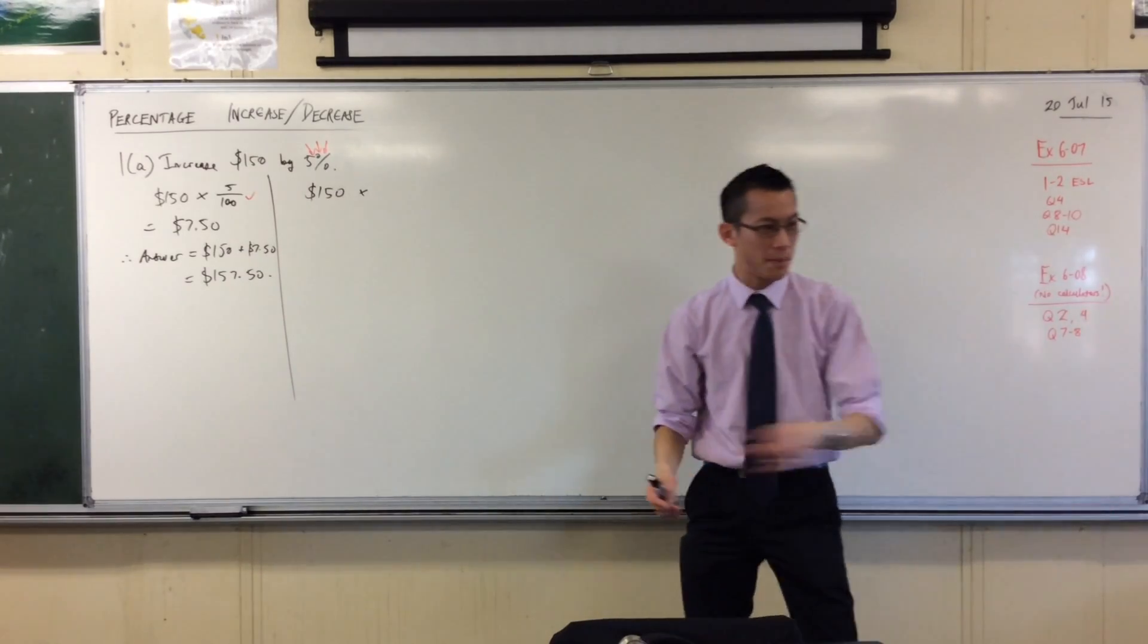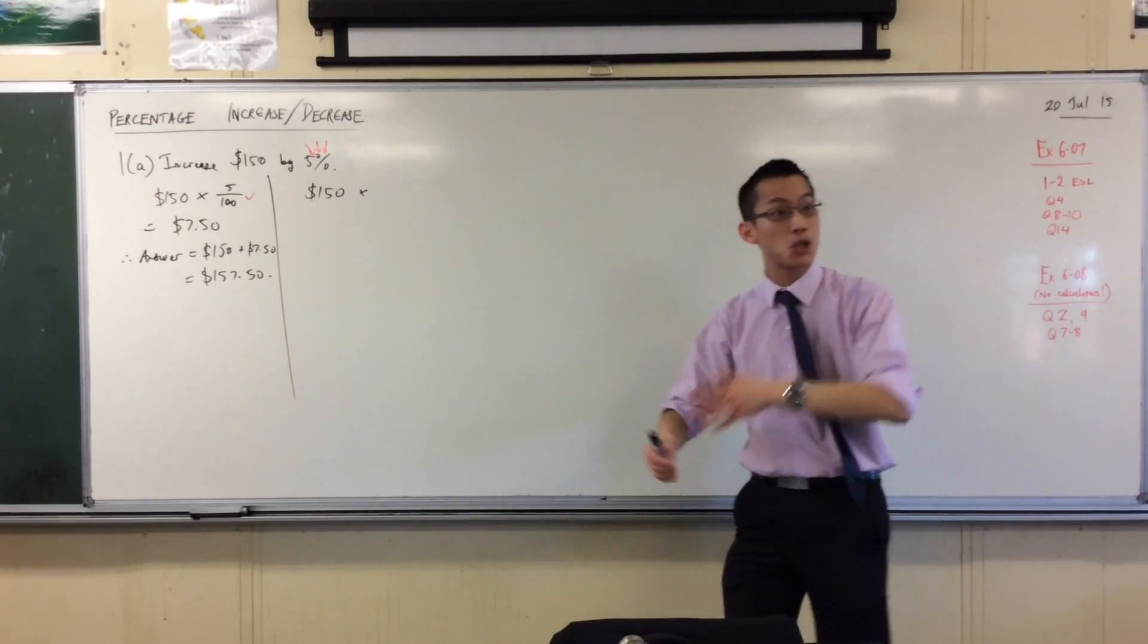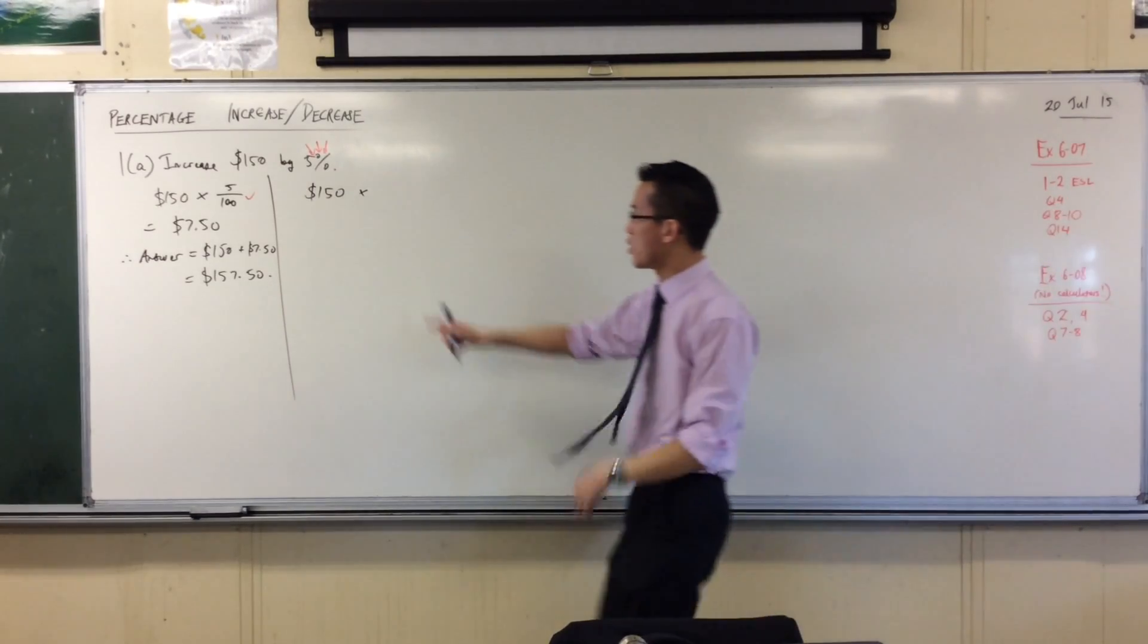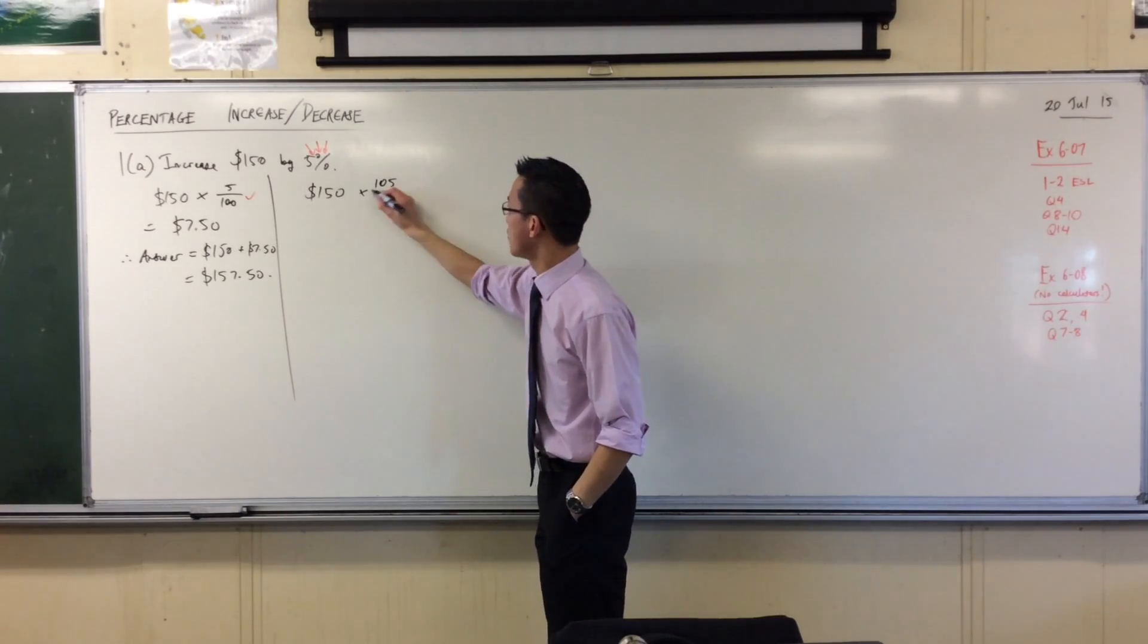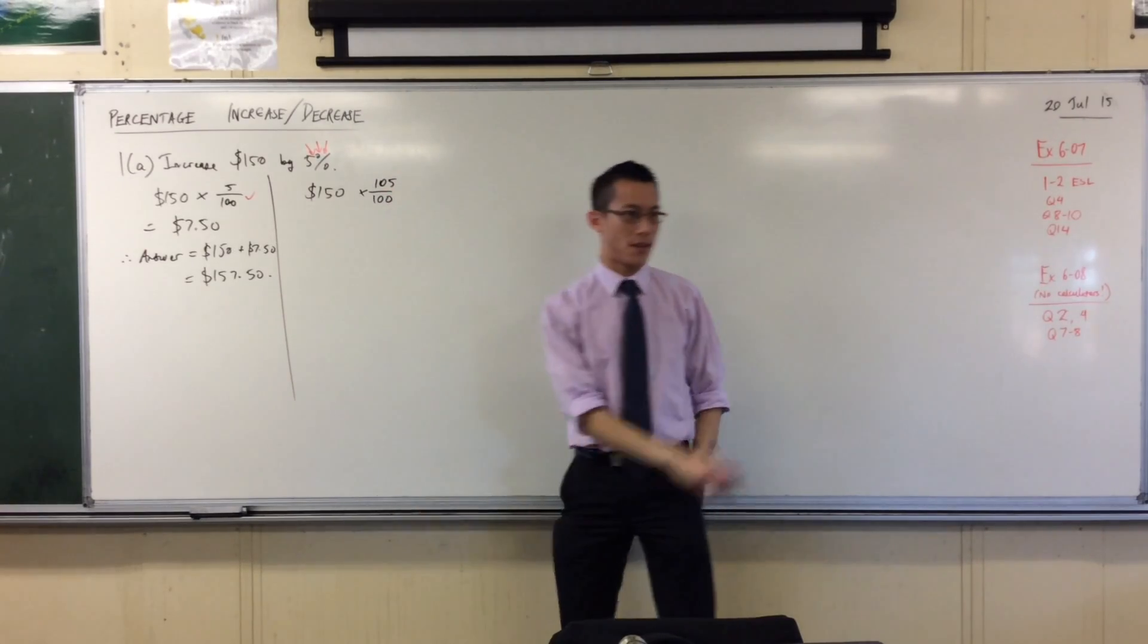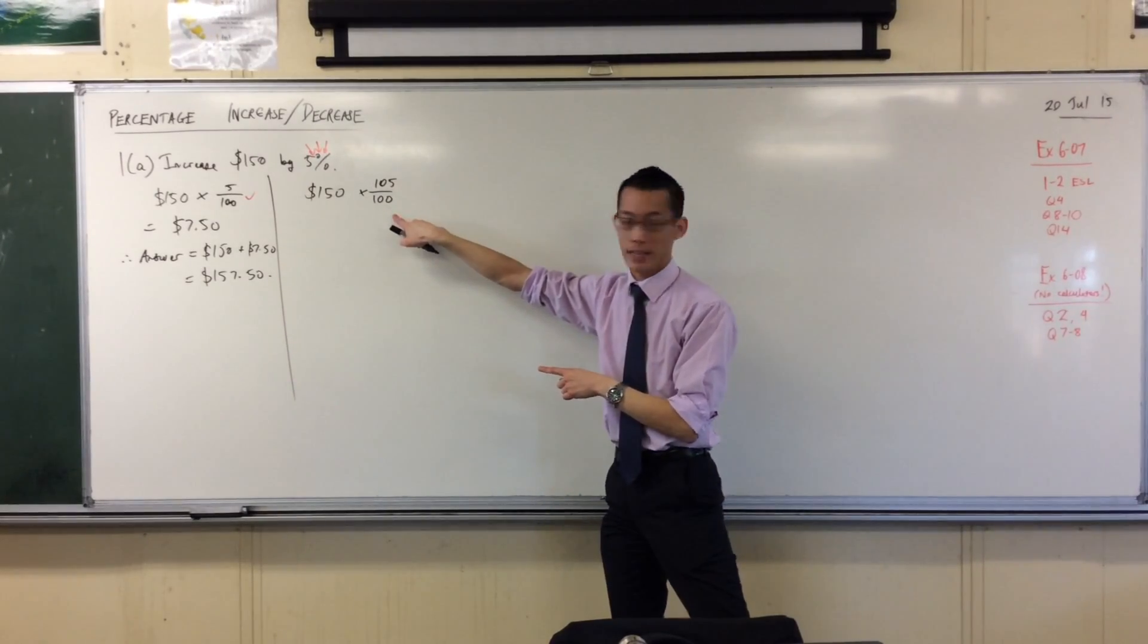And if I was increasing by 20, it'd be 120%, or if I was increasing by 100, it'd be 200%. So here I'm going to multiply, and I'm going to multiply by, instead of 5, 105. That's my 105%.